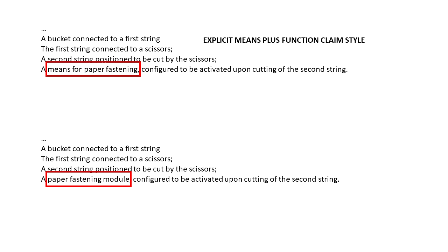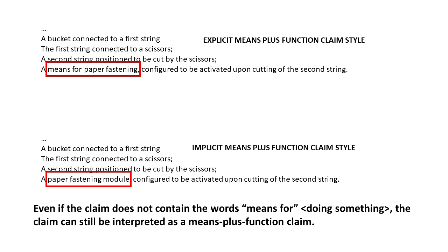What about this claim at the bottom? What if I say paper fastening module instead of means for paper fastening? Will this claim still be interpreted using the means plus function protocol? Often the answer is yes.